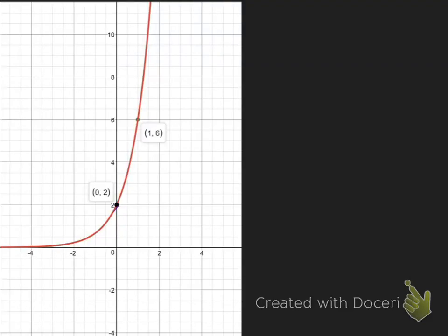Today we're going to be looking at how to write an exponential equation given a graph. So we want to first remember that all exponentials can be written in the form y equals a times b to the power of x.